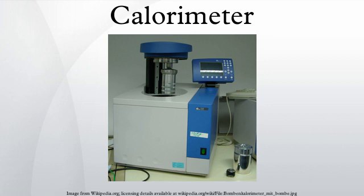A bomb calorimeter is a type of constant volume calorimeter used in measuring the heat of combustion of a particular reaction. Bomb calorimeters have to withstand the large pressure within the calorimeter as the reaction is being measured. Electrical energy is used to ignite the fuel. As the fuel is burning, it will heat up the surrounding air, which expands and escapes through a tube that leads the air out of the calorimeter. When the air escapes through the copper tube it will also heat up the water outside the tube. The change in temperature of the water allows for calculating the calorie content of the fuel.